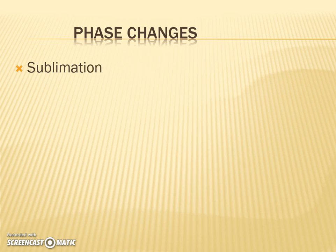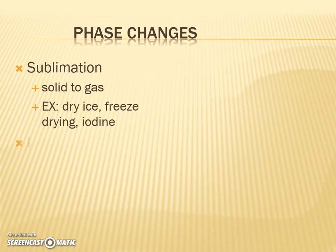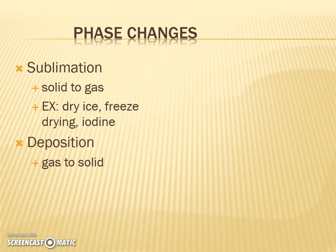There are two more phase changes: sublimation, like dry ice, which goes straight from a solid to a gas with no liquid phase. Then there's the opposite — deposition — where gas in the air freezes into solids on branches whenever you have frost. Frost is a very good example: it goes straight from gas to solid, skipping the liquid phase.